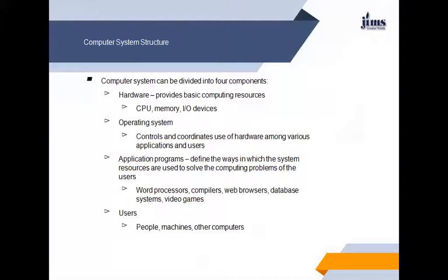Now, before going further, we will discuss the computer system structure — how our computer system structure looks. In a broad sense, there is hardware at the base of the computer system, then there is the operating system, then some application programs which are running on the system, and of course the users who use this computer system. When we talk about hardware, it provides basic computing resources like the CPU, memory, and input/output devices.